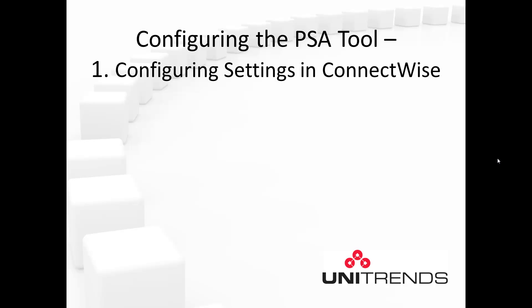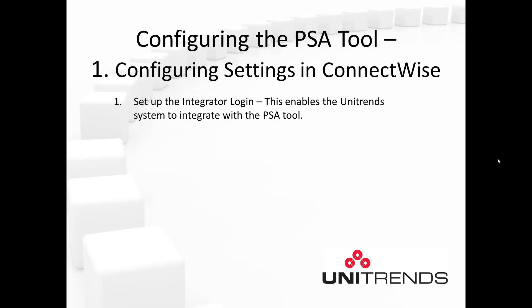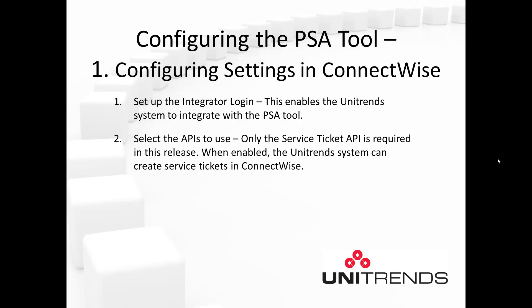Step one: configuring settings in ConnectWise. The first thing we'll do is set up the integrator login, which enables the Unitrends system to integrate with the PSA tool. Next, we'll select the APIs to use. At this point, only the service ticket API is required in this release, which is 7.2. When enabled, the Unitrends system can create service tickets in ConnectWise.